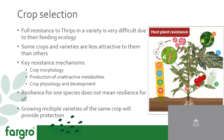Key resistance mechanisms include crop morphology — if a thrips likes more densely foliated plants, then that might attract them, so you can consider a variety with less dense foliage. Does your plant produce unattractive metabolites? For example, garlic is very unattractive to thrips. You can also get chili plants that produce specific metabolites that certain species of thrips don't like.